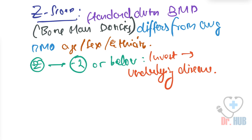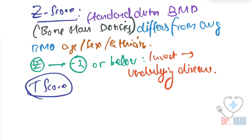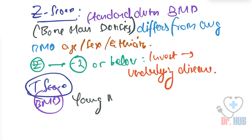Next comes something known as the T-score. The T-score is the BMD at the site — bone mass density — when compared to the young normal reference man.